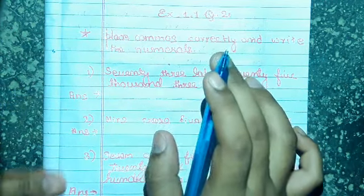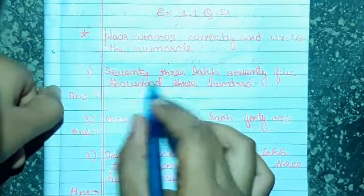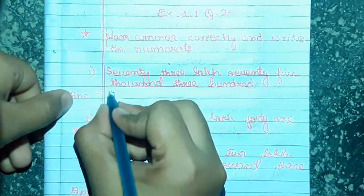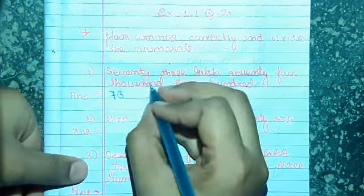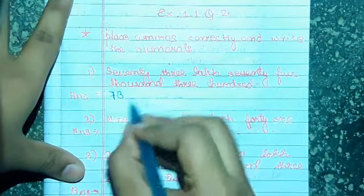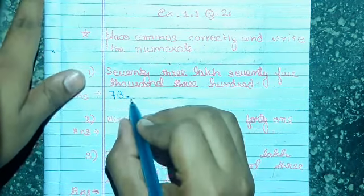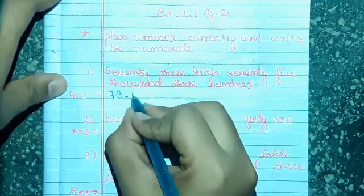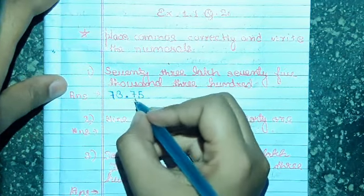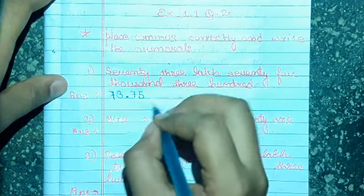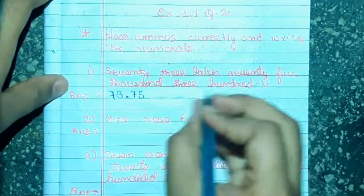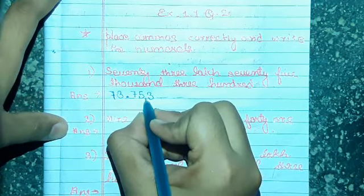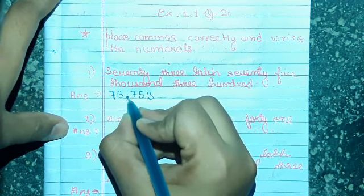So how we write? First we write 73 lakh, then we place a comma. Then we write 75,000, so we write it here as 75,000. And now we write 300. So we write here 300. We can write it like this, okay.